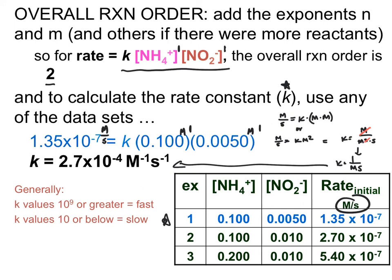Some of you may be wondering what constitutes a fast or slow reaction based on the rate constant value. Values of 10⁹ or greater are typically considered really fast reactions, while those of 10¹ or smaller are going to be relatively slow reactions, although you're not usually going to be requested to differentiate between either of those. Just keep that as a general idea.